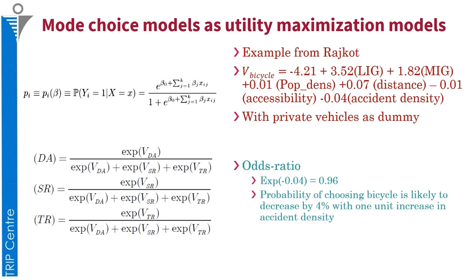I will take you through an example where the utility of bicycle is determined as being equal to minus 4.21, which is the constant, plus 3.52 if the person belongs to the lower income group, plus 1.82 if the person belongs to the middle income group, plus 0.01 for population density, plus 0.07 multiplied by distance, minus 0.01 multiplied by accessibility, minus 0.04 multiplied by accident density. This utility is in comparison to the private vehicle.